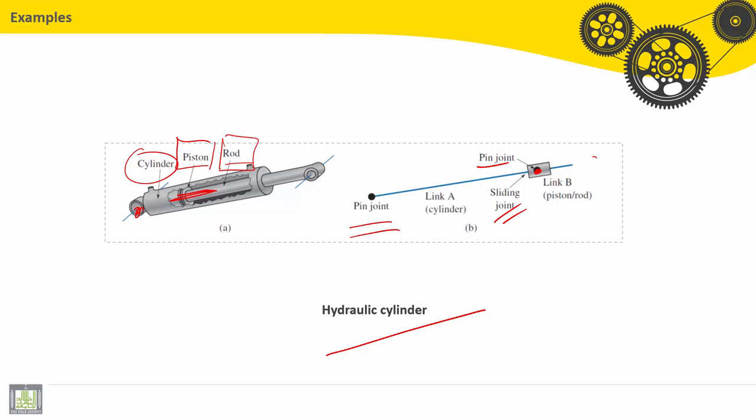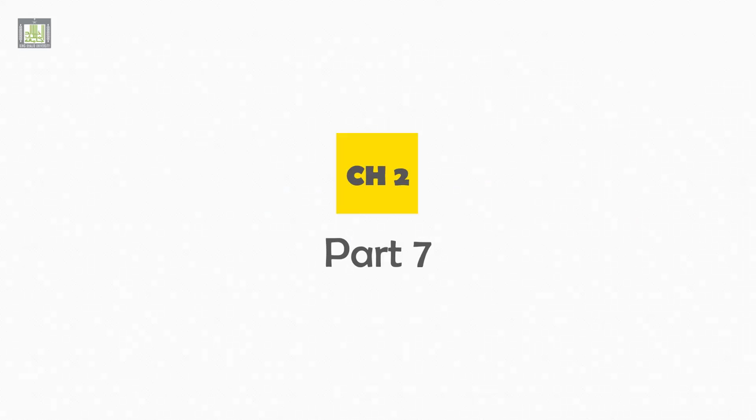Sliding joint here, link piston rod and link A for the cylinder. Very easy and very fast to make kinematic diagrams and then start analysis of the mechanism. See you, bye bye.